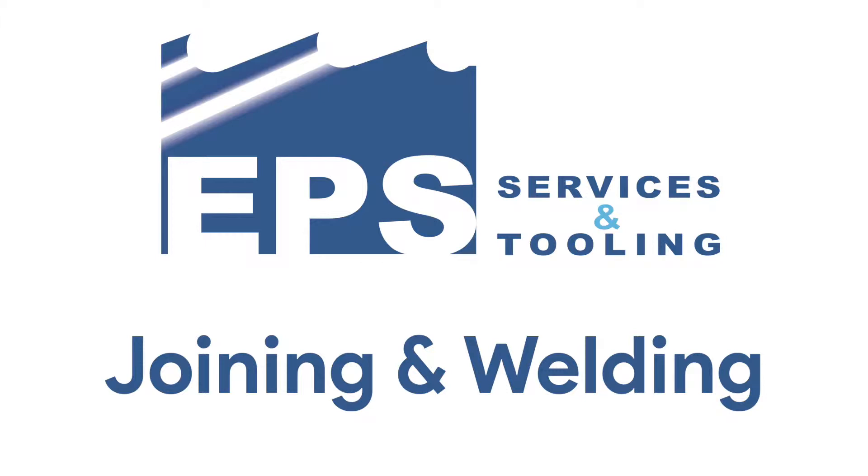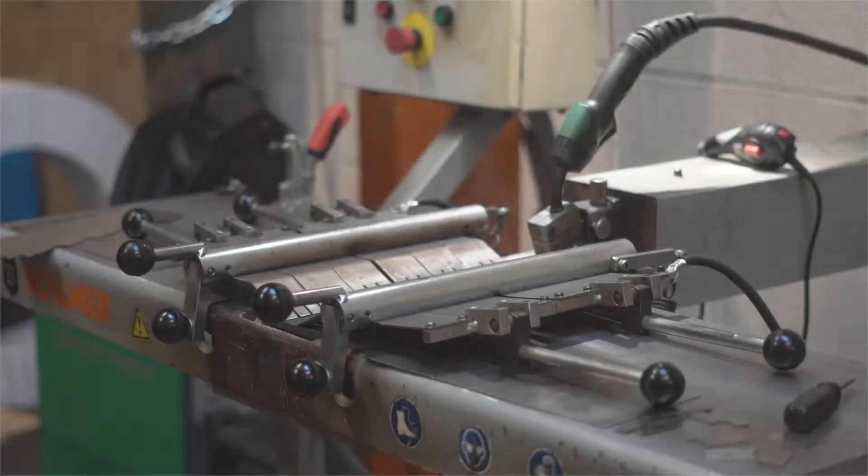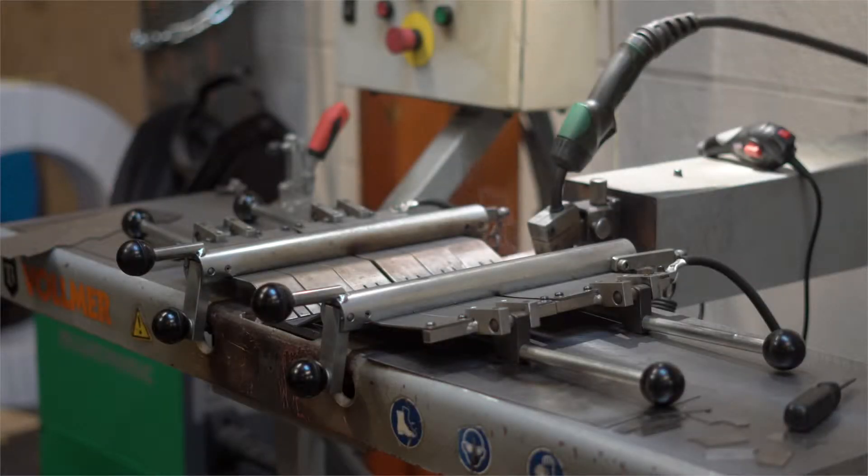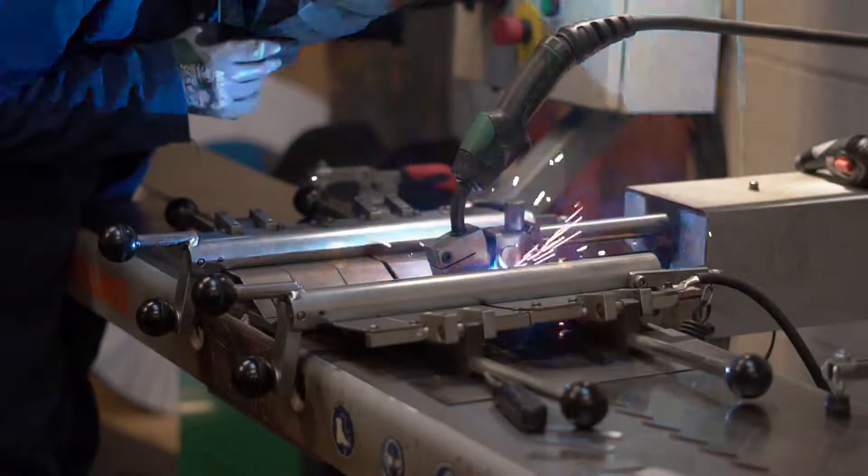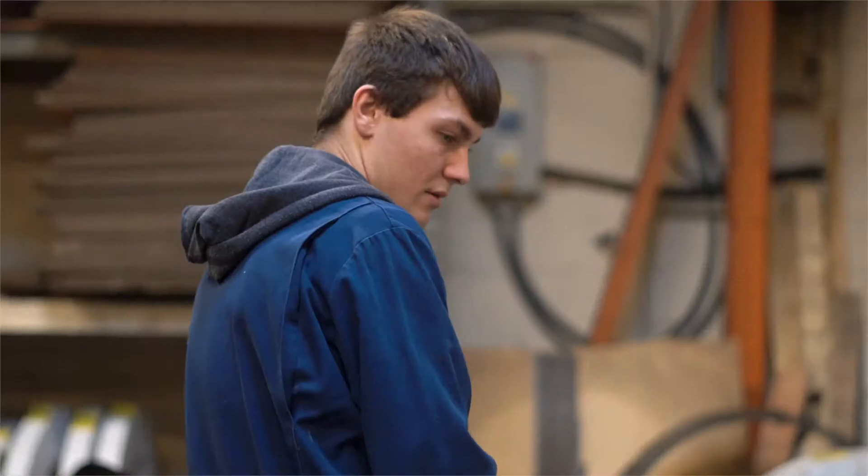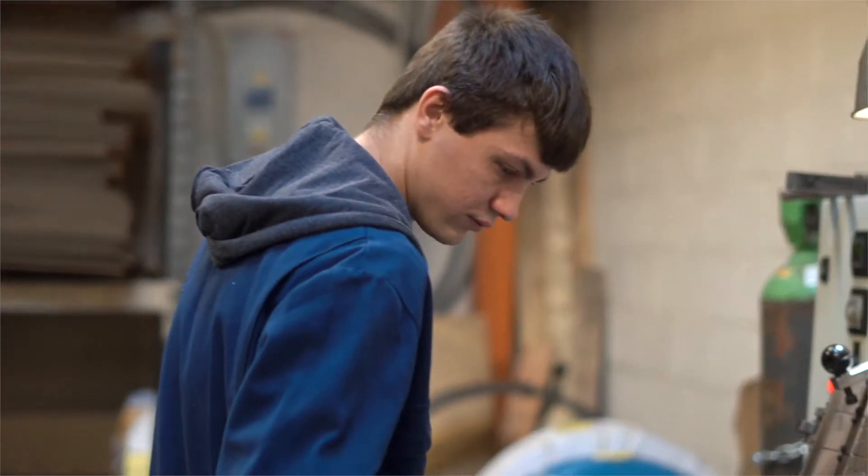EPS join or weld the saw using a modern Volner MA311. This tried and tested automatic welding machine uses a MIG process for the joining of bandsaws. This particular equipment was installed in 2017.